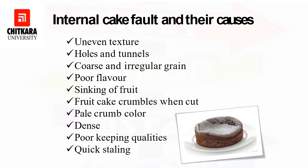Pale crumb color means the crumb is very pale. Reasons include too little sugar, lack of milk, very slow baking time, too much bottom heat, and the type of sweetening agent used. In fruit cakes, high sugar content of fruits can also lead to pale crumb.